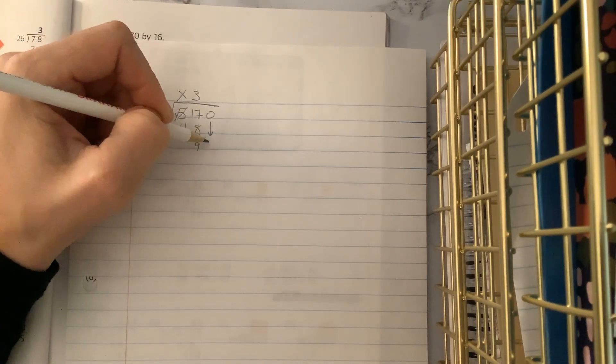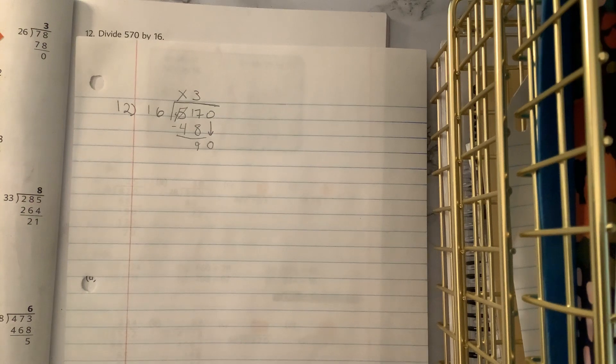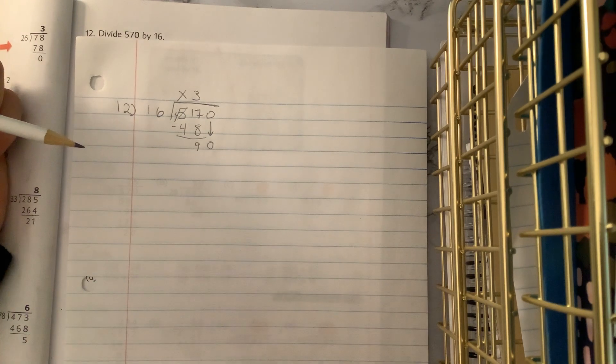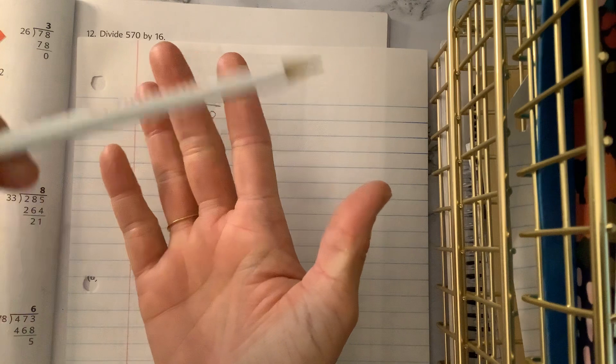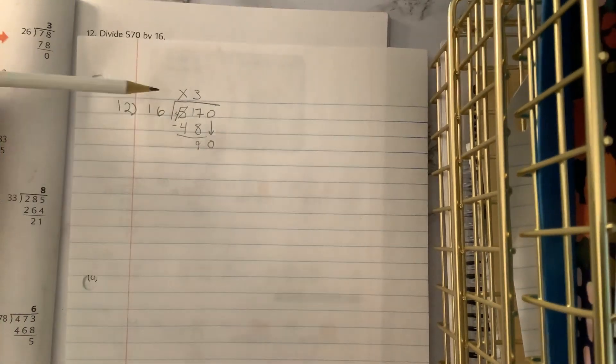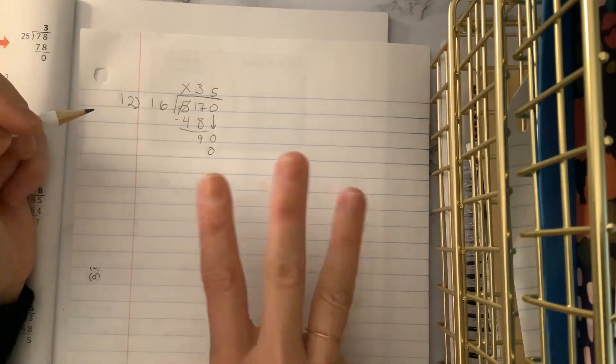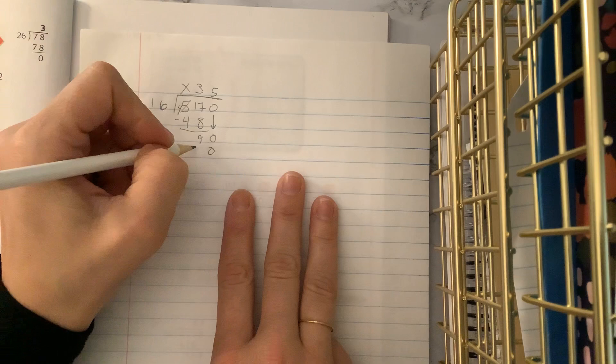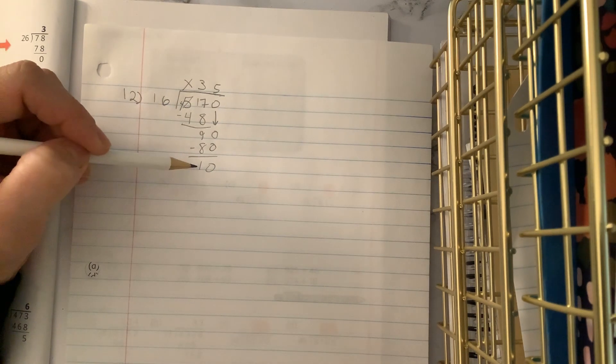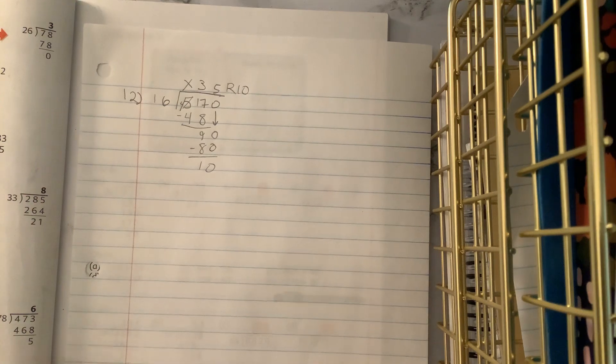But now, look at that, we are finally bringing down. So we want to bring down that zero, and now we divide again. How many times does 16 go into 90? Think about quarters of an hour: 15, 30, 45, 60, 75, 90. That'd be six, but this is greater than 15, so we should probably just try five. Five times six is 30. Hang on to that three. Five times one is five, plus three is eight. We subtract and get 10. There is nothing more to bring down, which means that this is our remainder. We can check and see, is 10 less than 16? Yep, so we can be confident. Our answer, 35, remainder 10, which, if you look at the textbook, is what they got to.